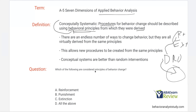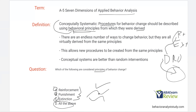This allows new procedures to be created from the same principles, and conceptual systems are better than random interventions. You can always trace your intervention back to a principle. Which of the following are considered principles of behavior change? The three primary principles — from which everything we do is derived — are reinforcement, punishment, and extinction. So D, all of the above. Differential reinforcement uses reinforcement and extinction; response cost is punishment; shaping reinforces approximations. All conceptually systematic because they're based on our principles.